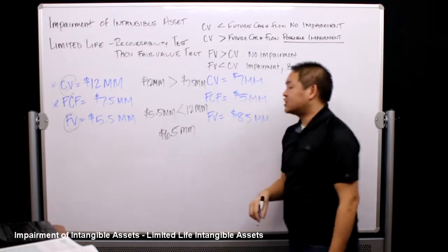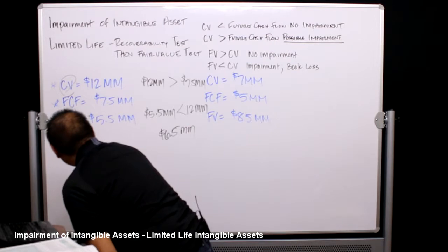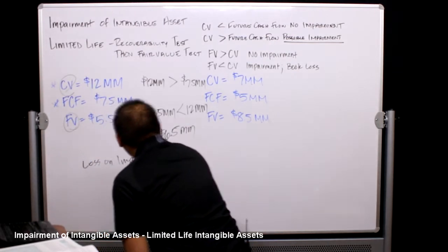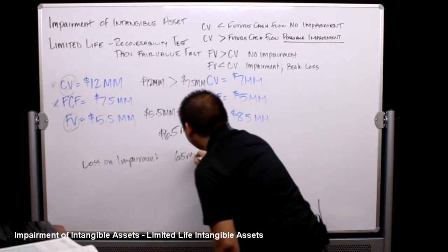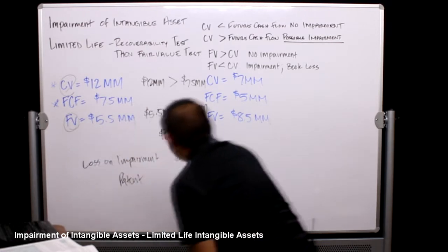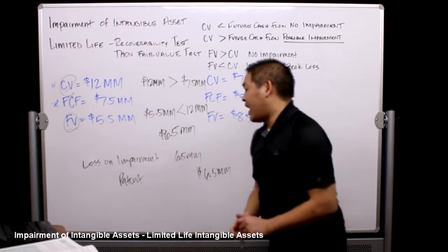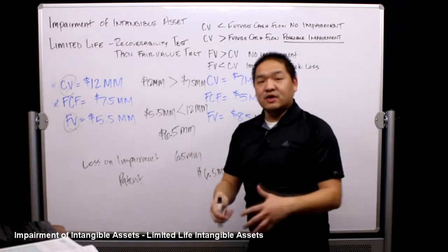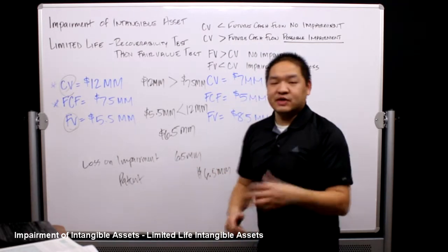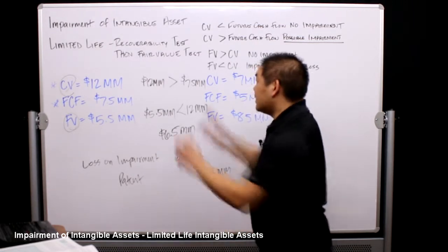We would have a six point five million dollar impairment loss. The journal entry would be: debit Loss on Impairment for six point five million, and credit Patent for six point five million. Typically with intangibles, we take it right back to the actual intangible asset — in this case, the patent. That's an example of a limited life impairment test for an intangible asset.